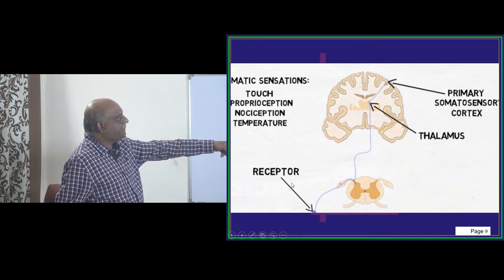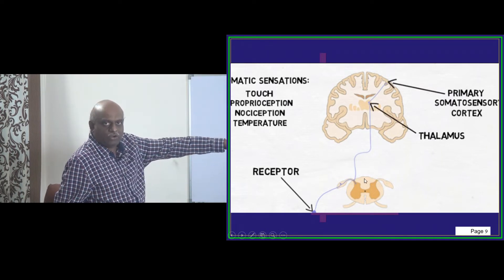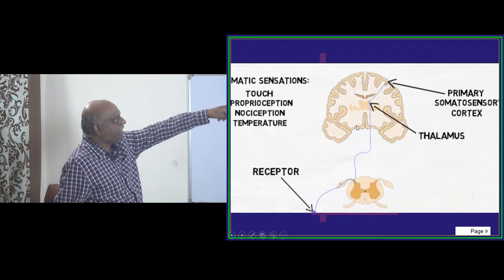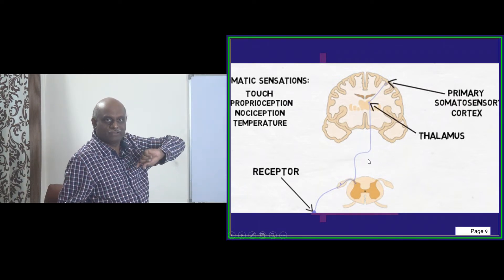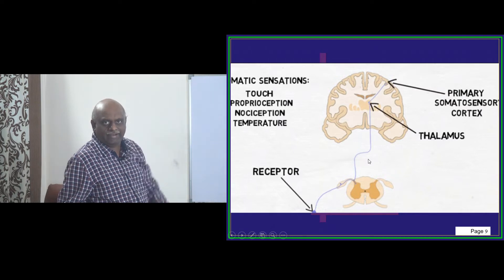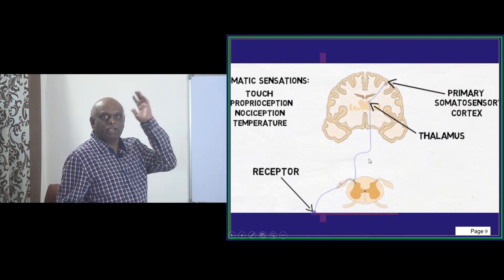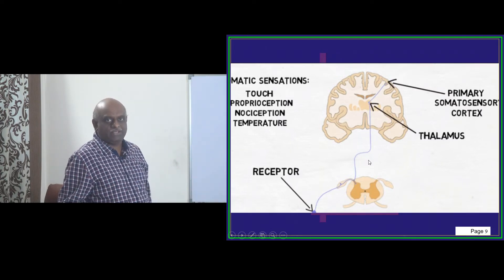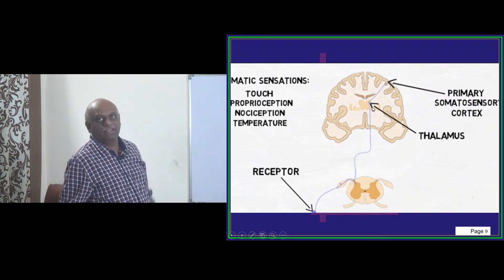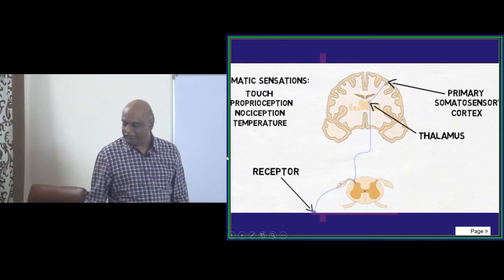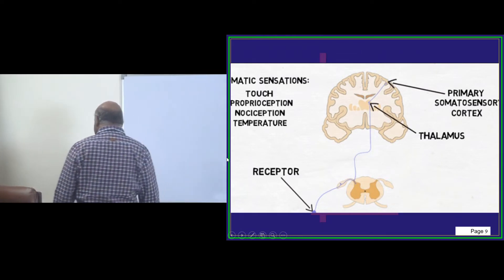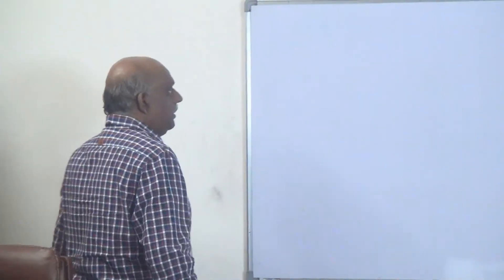Touch and proprioception reach the spinal cord through gracile. From the spinal cord up to the medulla, they reach as gracile and cuneate tracts. From there, they become the medial lemniscus and ultimately reach the thalamus. So this is what you need to remember. Can you give me the board, please?